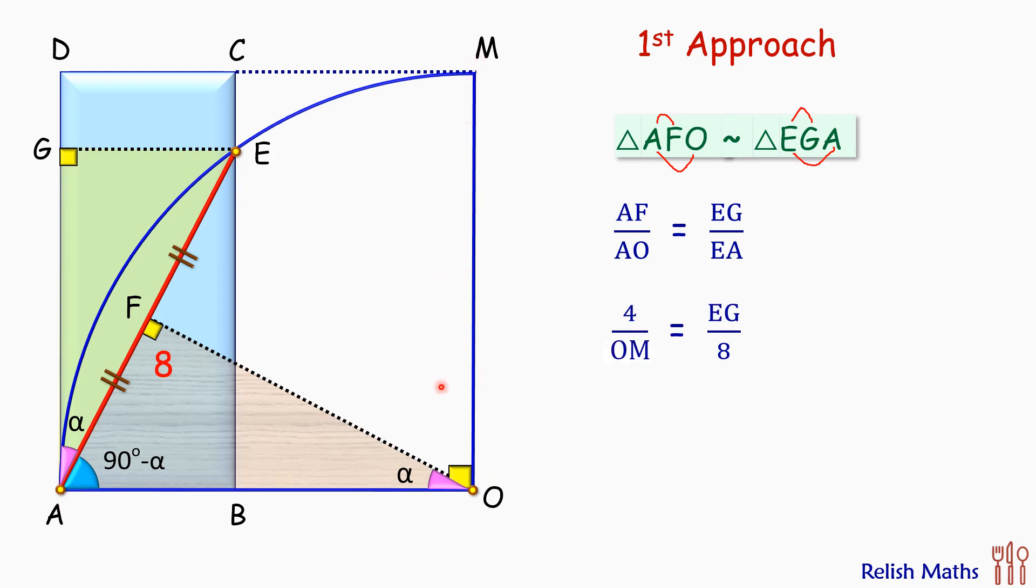Also, this OM equals the length of the rectangle, that is BC. And also here EG, EG length is same as AB here. Now cross multiplying, we'll get AB times BC is 4 times 8.